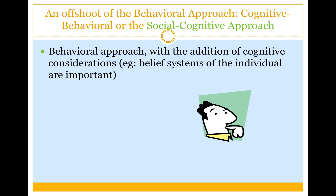This questioning of the basic behavioral approach led to an offshoot called the cognitive behavioral or social cognitive approach. It has all the strengths of learning theory but also adds in cognitive considerations — specifically, individual differences in belief systems that change the way you, as an individual, respond to environmental events, particularly to challenging or rewarding events.